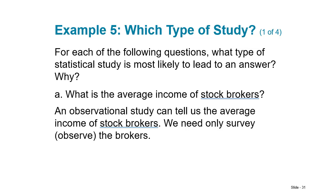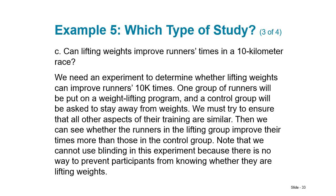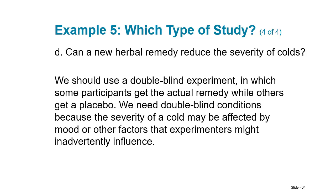For each question, what type of study is most likely to provide an answer? What is the average income of stock brokers? — An observational study; you only need to observe the data. Do seat belts save lives? — A retrospective study; go back through crash data to see what percentage of fatalities were or weren't wearing seat belts. Can lifting weights improve runners' times in a 10K? — An experiment with control and experimental groups. Can a new herbal remedy reduce the severity of colds? — A double-blind experiment, since severity is subjective and not easily measured.